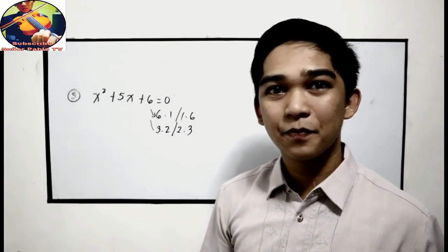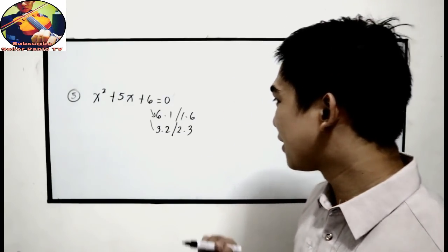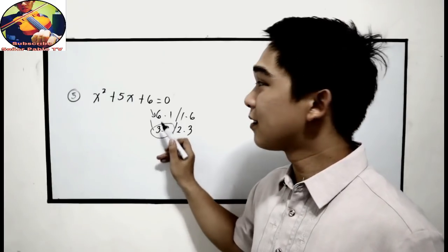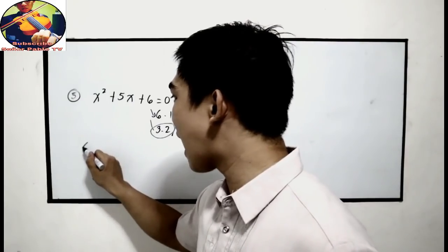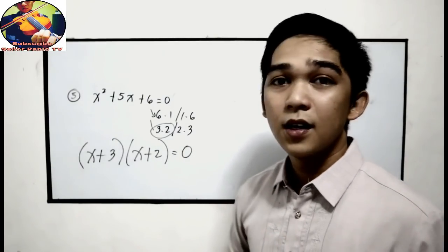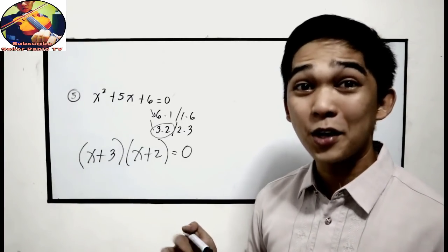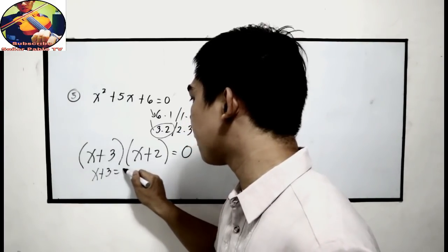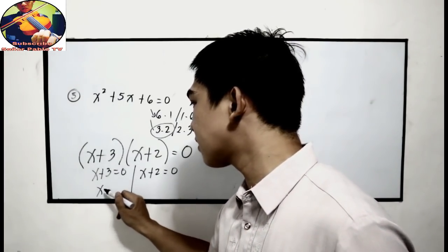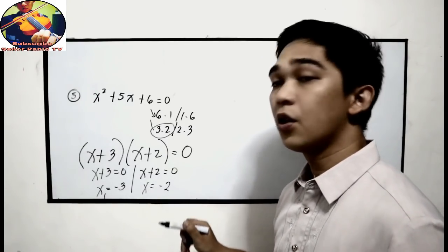Our technique is the sum must be equal to the middle term. So we need to pick 3 times 2, because 3 plus 2 equals 5. The factors now are x plus 3 times x plus 2 is equal to 0. It can also be x plus 2 times x plus 3 — that would be the same. Equate to 0: x plus 3 is equal to 0 and x plus 2 is equal to 0. Transposing, x sub 1 is negative 3 and x sub 2 is negative 2.